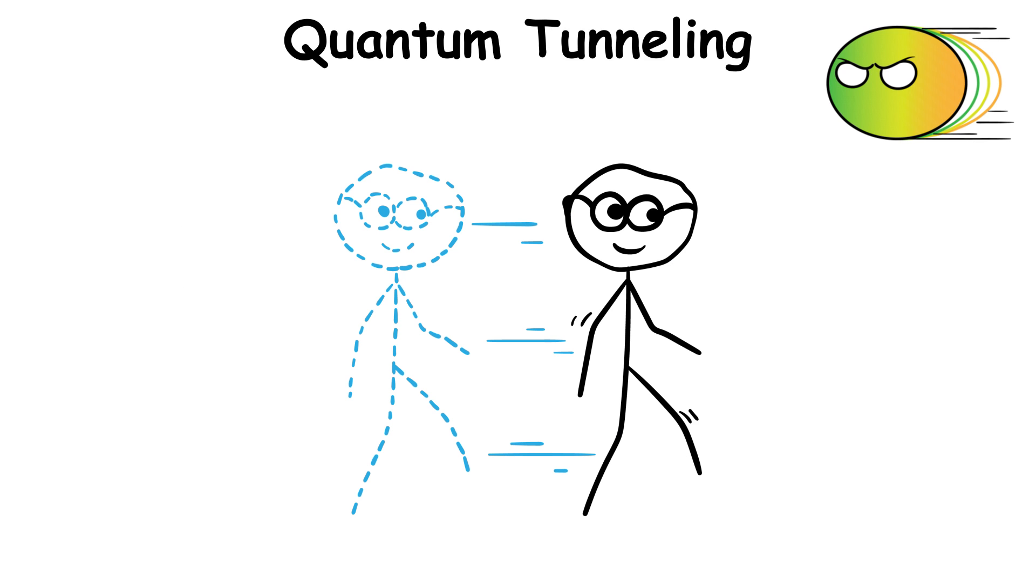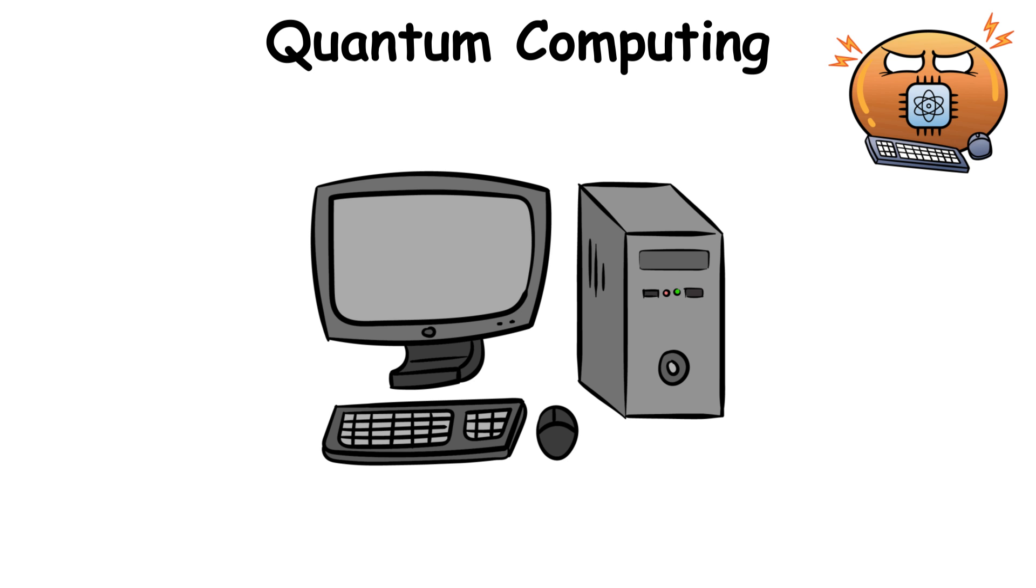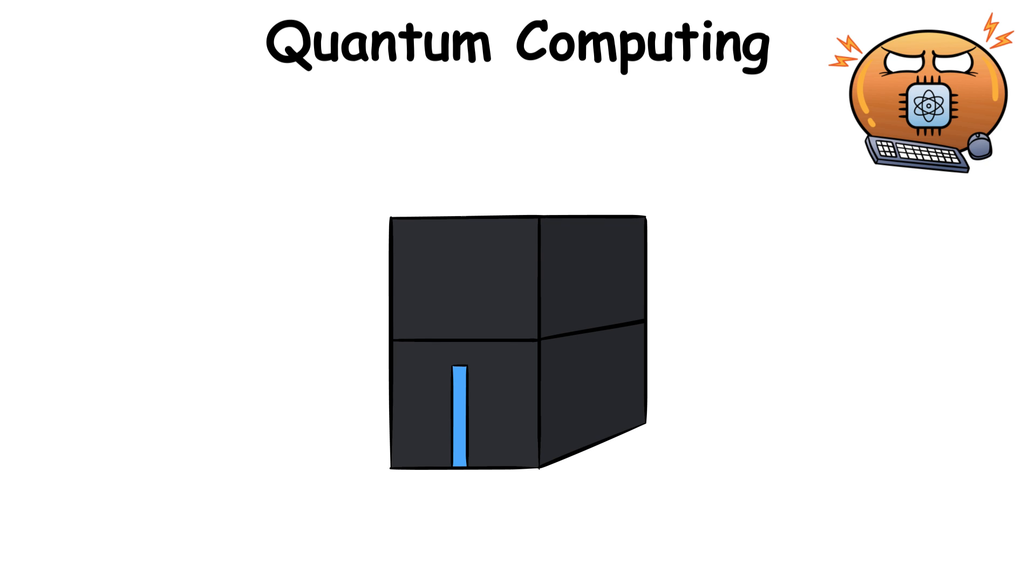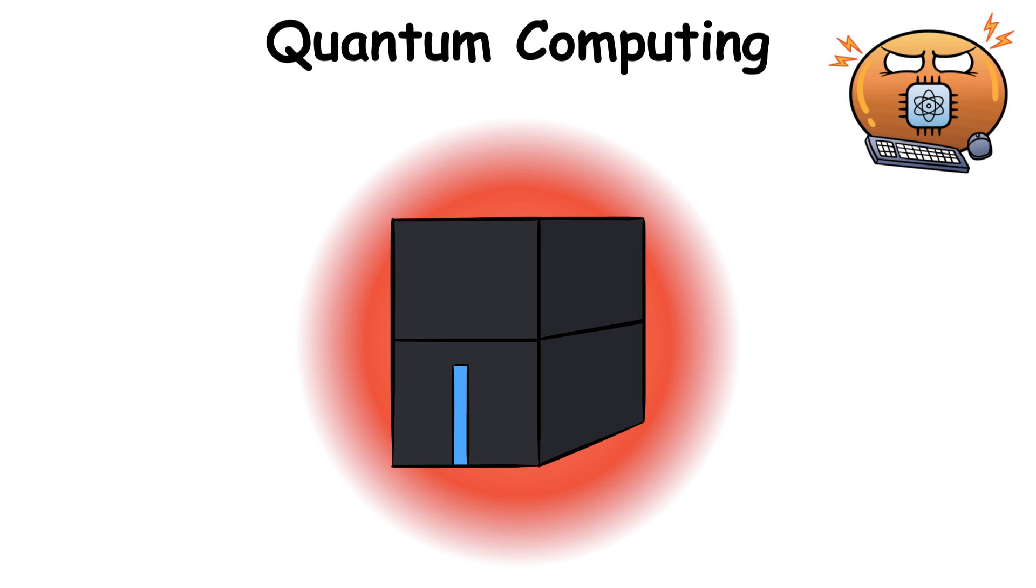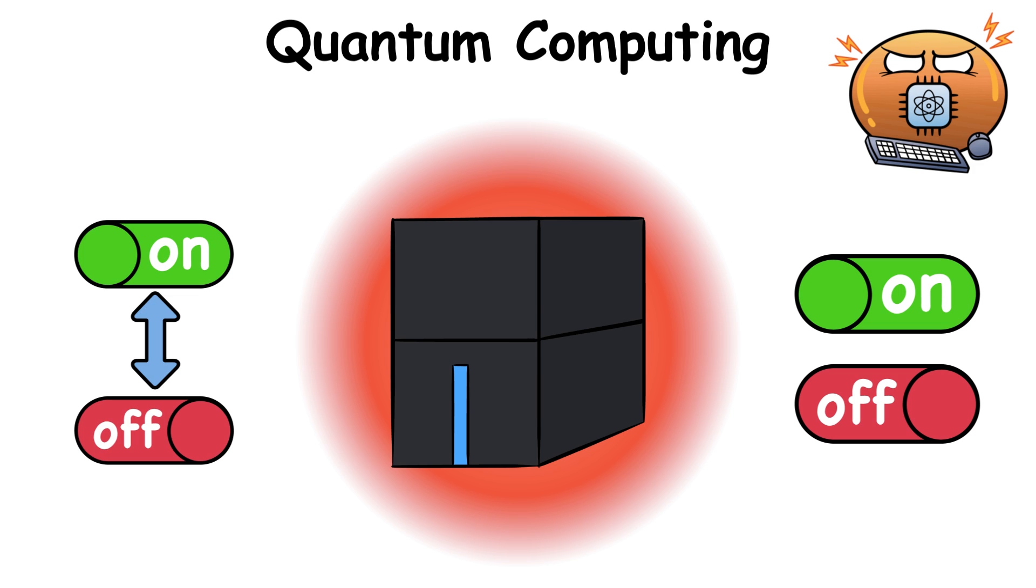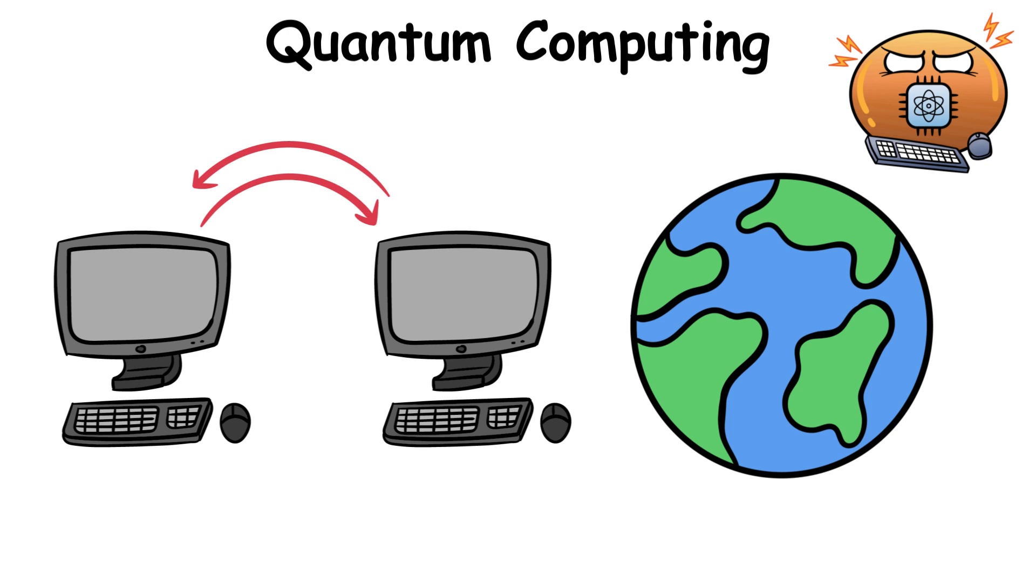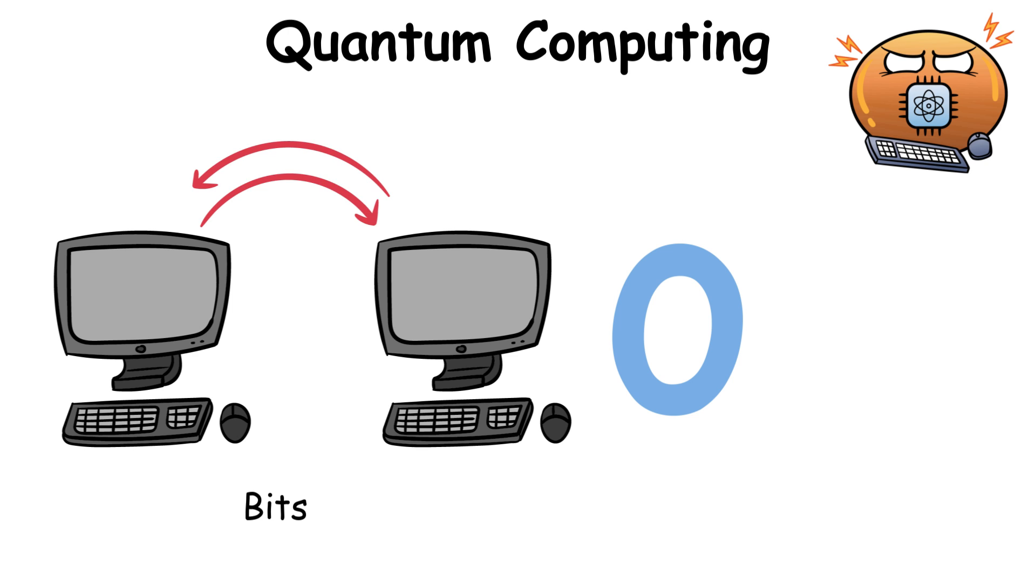Quantum computing. Regular computers are capable of two things. They can either be on or off. But let's say there's a quantum computer that has superpowers, in the sense that it can be on, off, or both on and off simultaneously. That's the basic principle behind quantum computing. In the regular world, computers exchange bits that can only be zero or one.